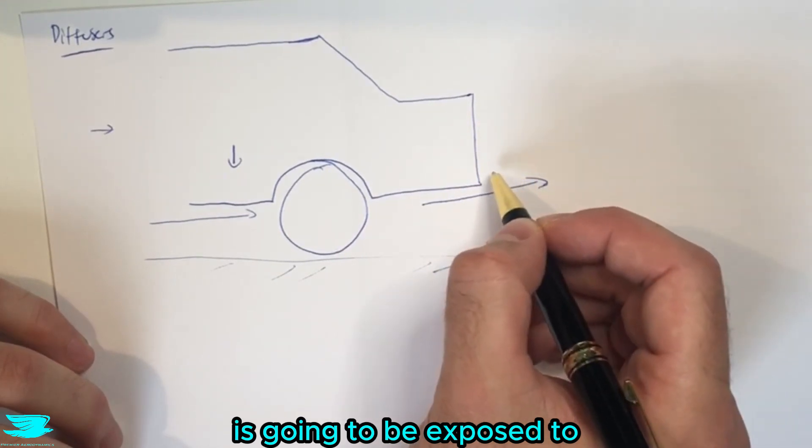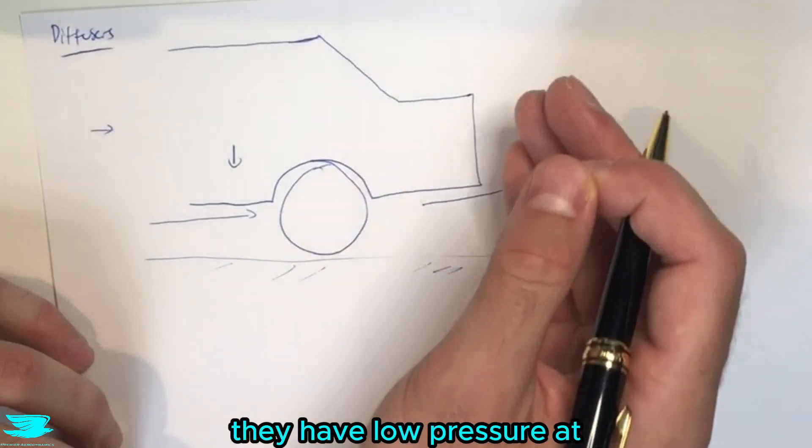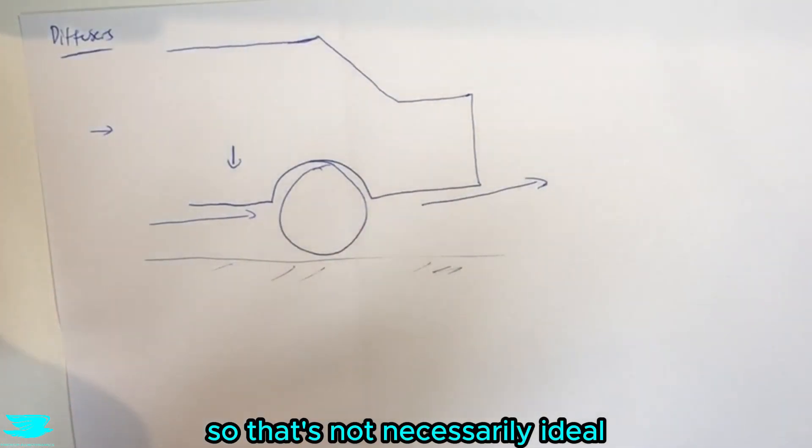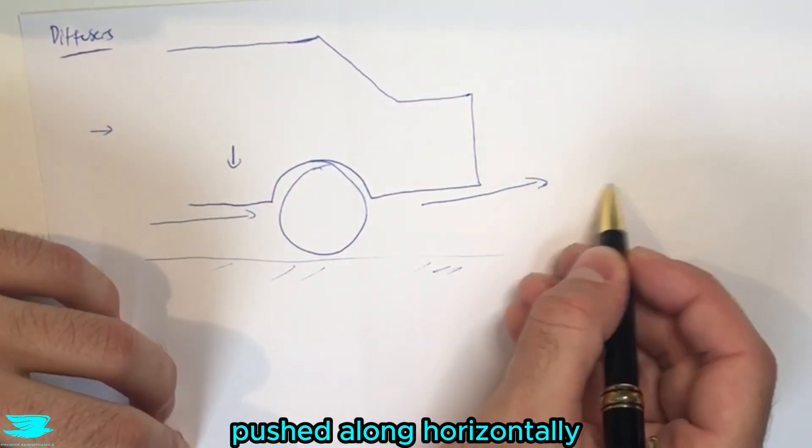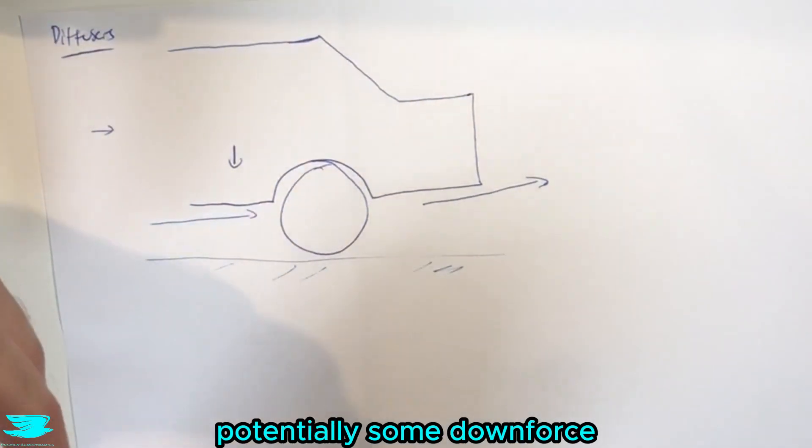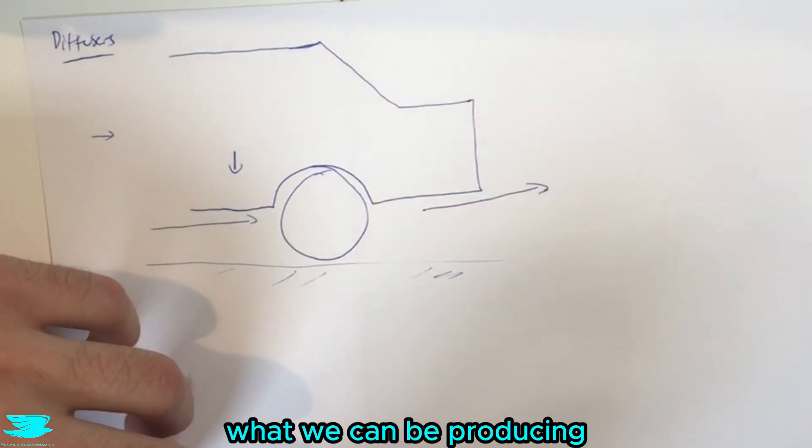That means we get higher drag because we have low pressure at the back, higher pressure at the front - that's pressure drag. So that's not necessarily ideal. Also if the flow is just being pushed along horizontally, that is generally an indication that we are getting potentially some downforce because of this low pressure, but not nearly as much as what we can be producing.